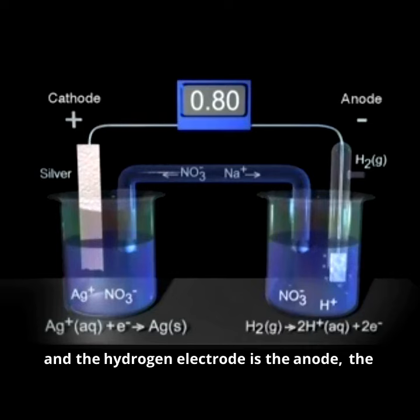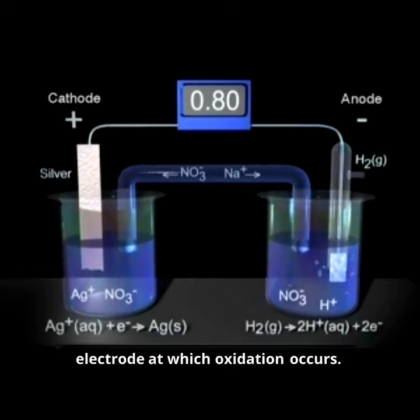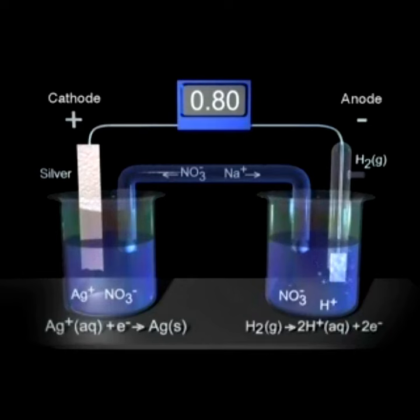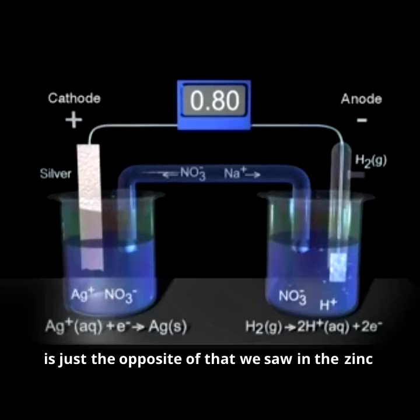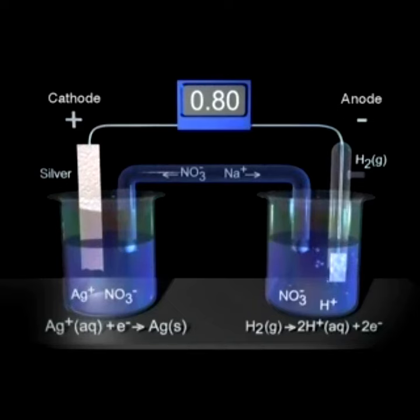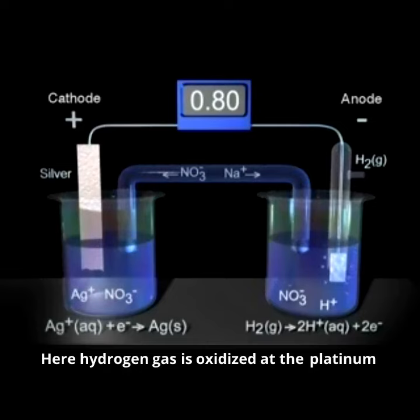And the hydrogen electrode is the anode, the electrode at which oxidation occurs. The reaction occurring at the hydrogen electrode is just the opposite of that we saw in the zinc hydrogen cell. Here, hydrogen gas is oxidized at the platinum electrode to form hydrogen ions.